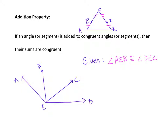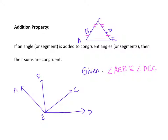The first example I want to look at is this more basic one with this triangle. We have this triangle and I already marked the given congruencies. We were given that AB is congruent to DE — those each have one congruency mark — and that BC is congruent to DC, which each have two congruency marks. The addition property says if an angle or segment is added to congruent angles or segments, then the sums are congruent.